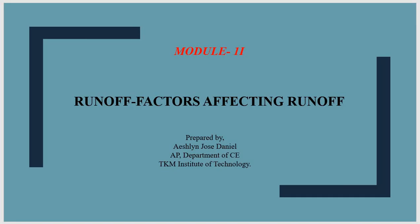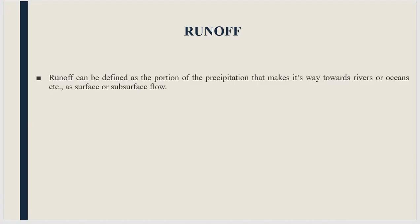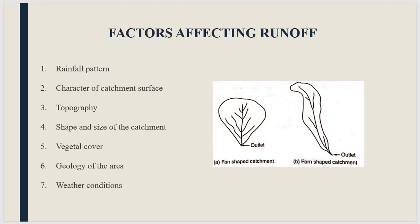In module 2, under runoff, we will be studying the factors affecting runoff. Last class we already studied what runoff is and its components. Runoff can be defined as the volume of surplus water discharged by a catchment area into a particular water body. It is usually expressed in centimeters, similar to rainfall, and is measured on a daily, monthly, or yearly basis.